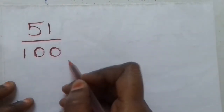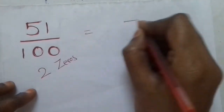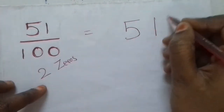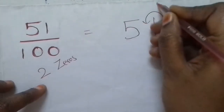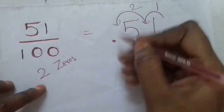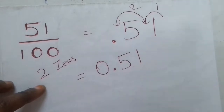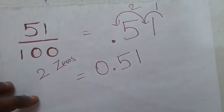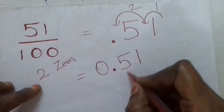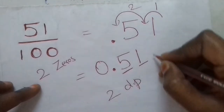Next question: 51 by 100. Count the number of zeros in the denominator — two zeros. Write the numerator as it is: 51. Shift two places to the left — first place, then second place, placing the decimal point. The answer is 0.51. Cross-verify: decimal point, one, two — two decimal places. Two zeros, two decimal places. The answer is correct.